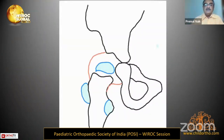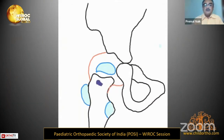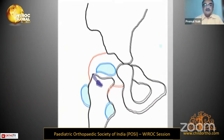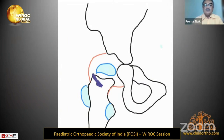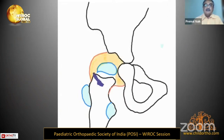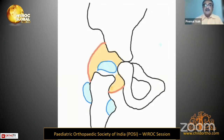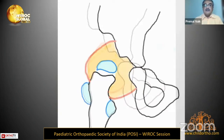As Mannar has mentioned, septic hip generally starts with osteomyelitis in the femoral neck, which extends into the joint. The joint becomes infected with pus accumulation, which may cause tamponade and vascular necrosis. If untreated, the capsule bulges.